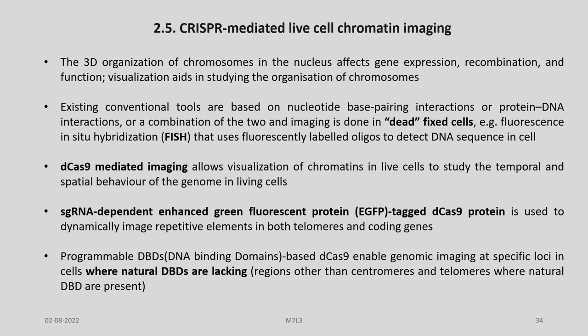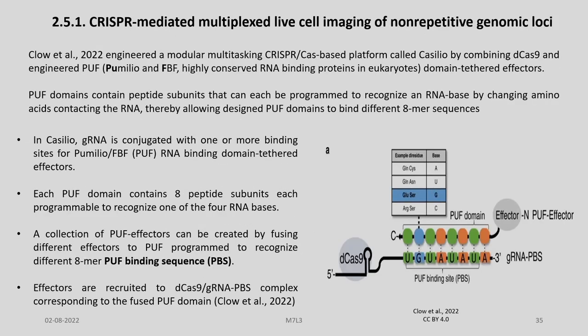D-Cas9 mediated imaging allows visualization of chromatin in live cells to study the temporal and spatial behavior of the genome. Single guide RNA dependent EGFP-tagged D-Cas9 protein is used to dynamically image repetitive elements in both telomeres and coding genes. Programmable DNA binding domains based D-Cas9 enable genomic imaging at specific loci in cells where natural DBDs are lacking. We can also use CRISPR for multiplexed live cell imaging of non-repetitive genomic loci.